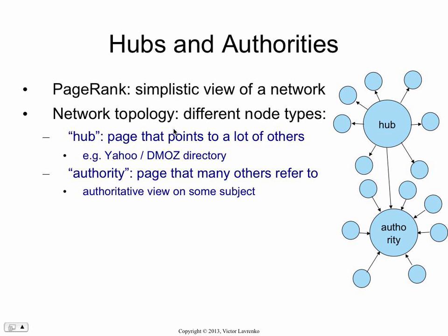Hubs and authorities takes a more structured view and says there are two types of nodes we're interested in modeling. There are hub nodes — hub nodes are nodes that point to lots of useful stuff. Think of the early days of the web, which is when this was developed. You had directories there — Yahoo had the best directory. That's why Yahoo ruled the world at that point.